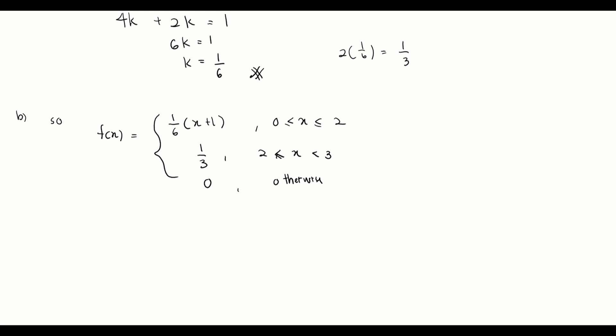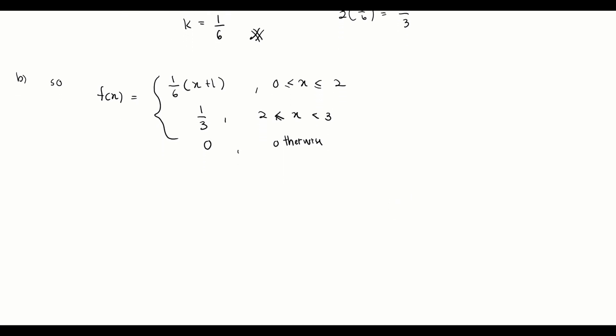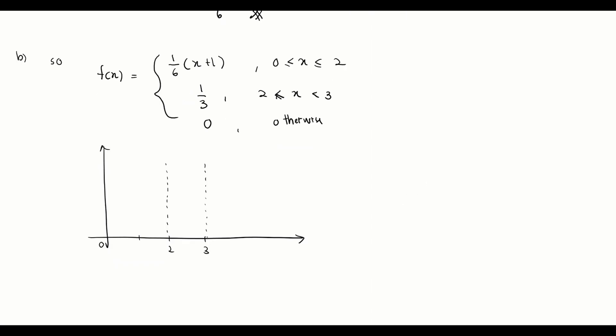This is a piecewise function, and we already know how to sketch piecewise functions from chapter 5. The graph is divided into two intervals: the first between 0 and 2, and the second between 2 and 3. Between 0 and 2, the function is linear, so we need at least two points to draw a straight line.